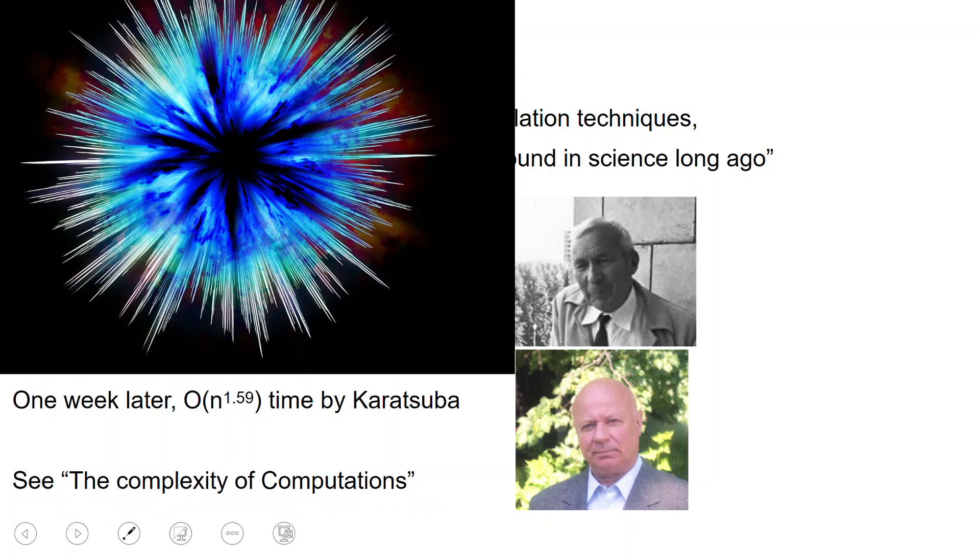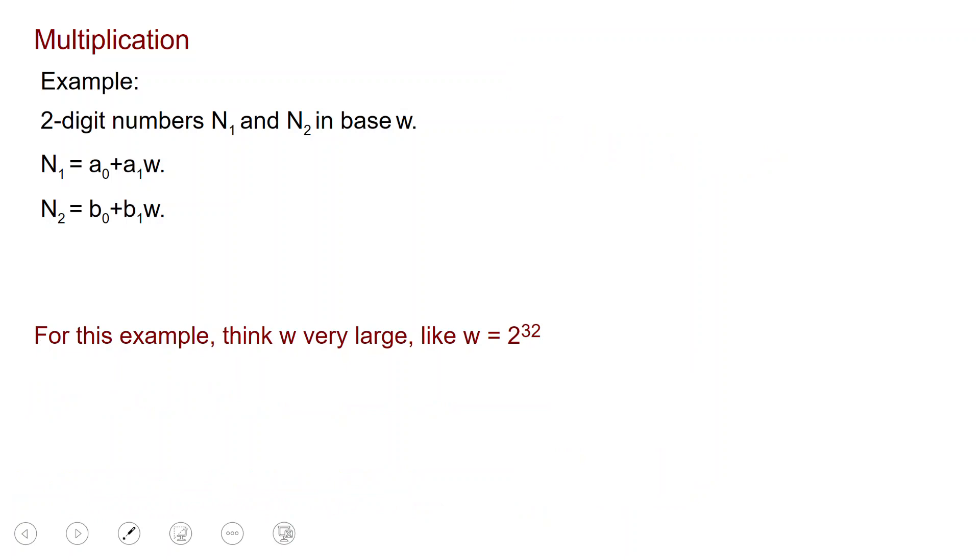Let us see what is the basic example behind Karatsuba. Let us consider a simple example. Now, this is not the full-blown algorithm. Let's assume that you want to multiply two digit numbers N1 and N2 in some base W. These numbers just have two digits. So I can write N1 as A0 plus A1 times W, and similarly I can write N2 as B0 plus B1 times W.